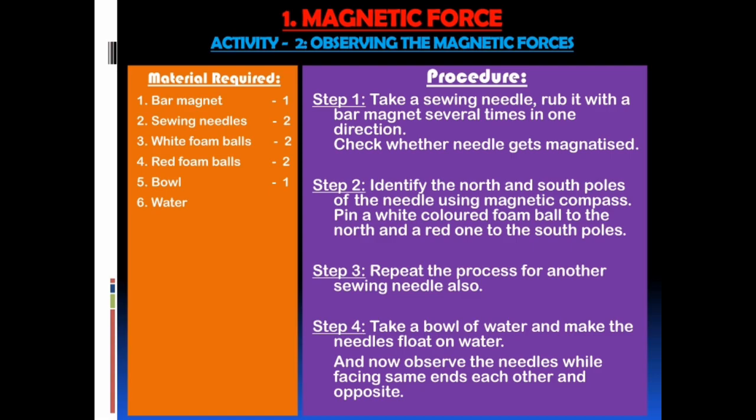Step 2: identify the north and south poles of the needle using a magnetic compass. Pin a white-colored foam ball to the north pole and a red one to the south pole. Step 3: repeat the process for another sieving needle. Step 4: take a bowl of water and make the needles float on the water. Observe the needles while facing the same ends toward each other and then opposite ends.